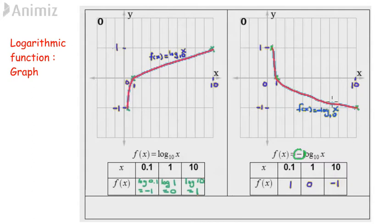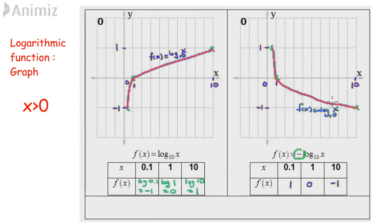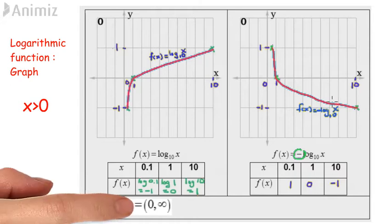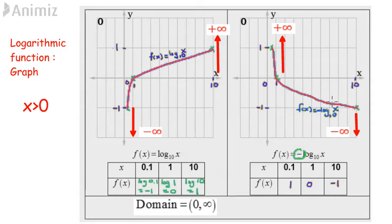These two functions are only defined for x greater than 0. The domain for both functions is all real numbers greater than 0, or can be written as from 0 to positive infinity. The graph extends from negative infinity to positive infinity, therefore the range is from negative infinity to positive infinity.